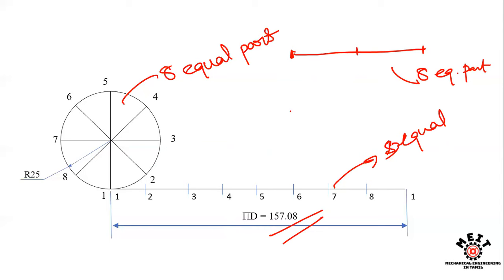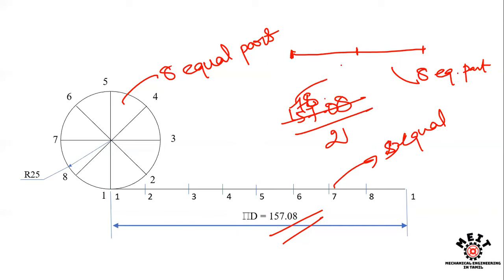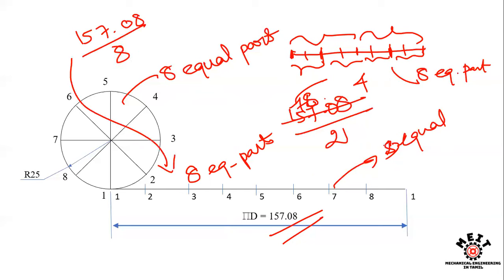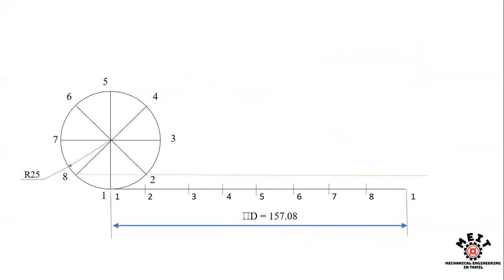Alternatively, you can directly calculate 157.08 ÷ 8 and mark each division with that value — this gives a more accurate result. After dividing the baseline into 8 equal parts, draw vertical lines at each division point.